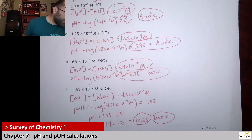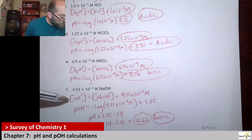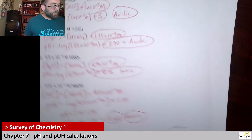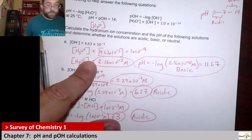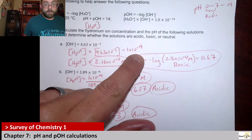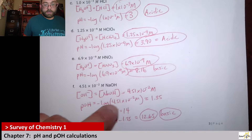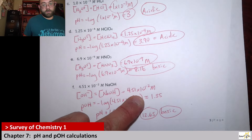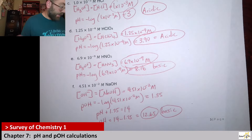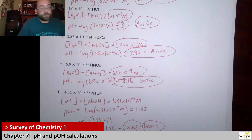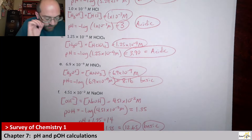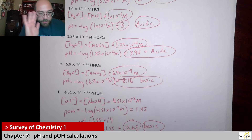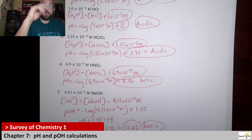I didn't give you the hydronium concentration — you would get that by taking 1×10⁻¹⁴ divided by the hydroxide concentration of 4.51×10⁻². Hopefully this helps you do these calculations with the negative log and understand the difference between pH and pOH. Stay weird, and I'll see you for the next chapter.